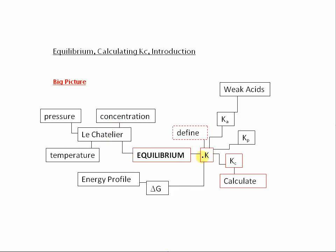After that, you might be thinking about K and defining K. And we will need to define K. But then there's different types of K. We can have Ka for weak acids, Kp for pressure, and Kc for concentrations. And it's this one here which we'll be looking at. And then we'll be calculating Kc. You can also relate this K through to delta G and energy profile diagrams.